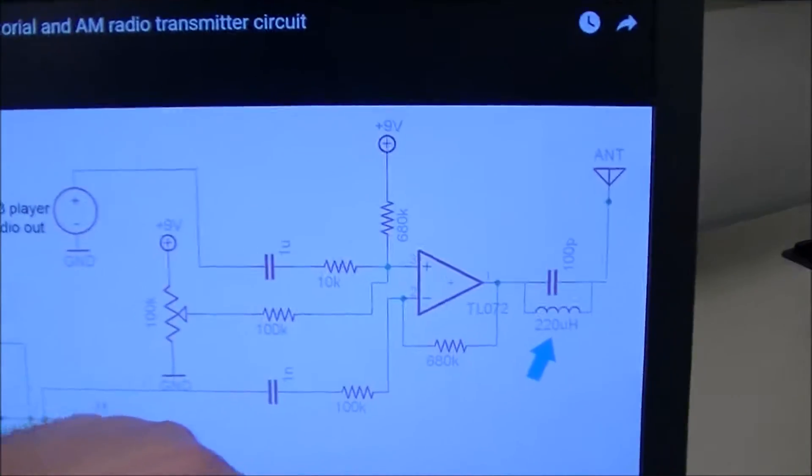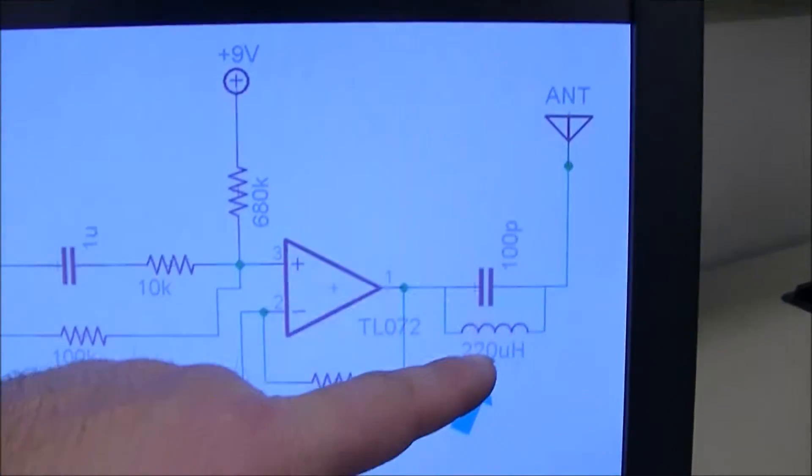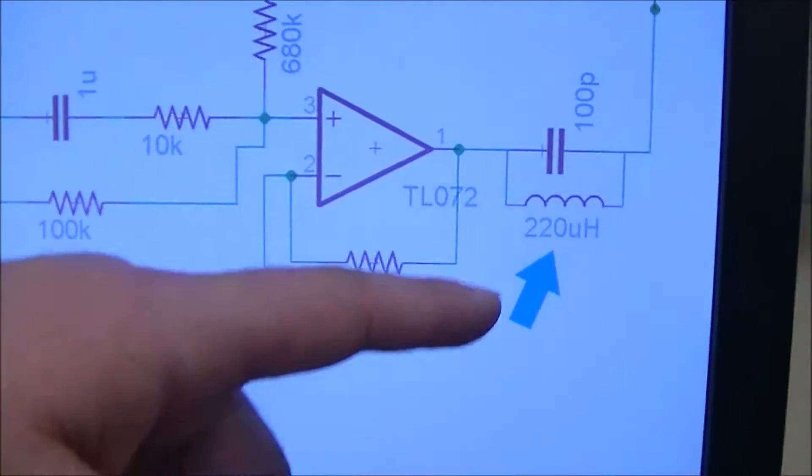They get sent through the antenna, and then the little inductor is there just to help with the amplitude kind of resonating. So here's what it looks like.